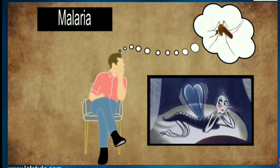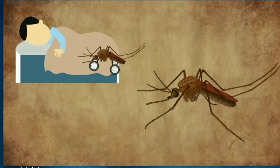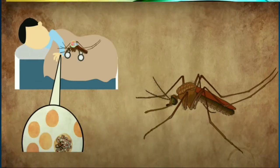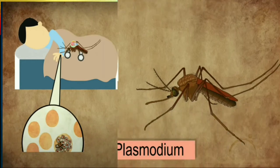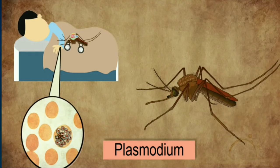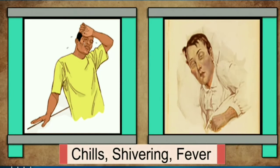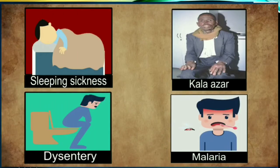People think malaria is caused by the female Anopheles mosquito, but this is not true. Actually, this mosquito only carries protozoa. When the mosquito bites us, the protozoa microorganism enters our body and we get the disease malaria. So the female Anopheles mosquito is the carrier of the protozoa plasmodium, and plasmodium is the actual reason for the disease malaria.